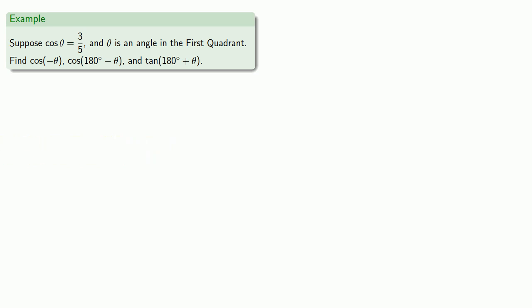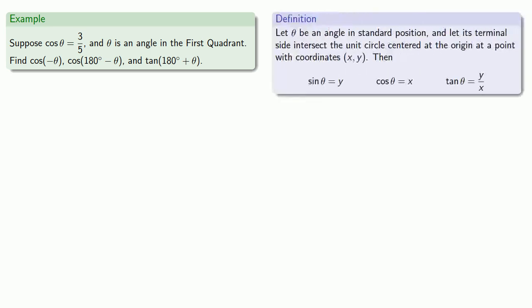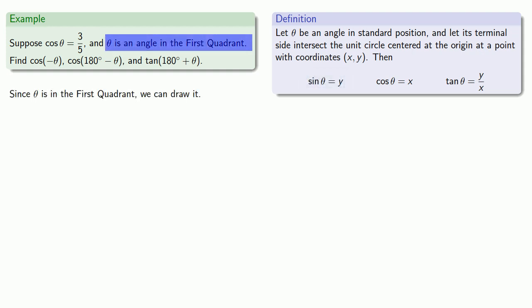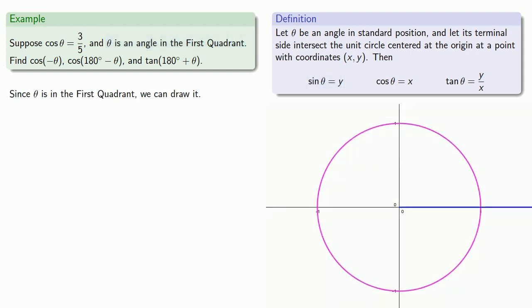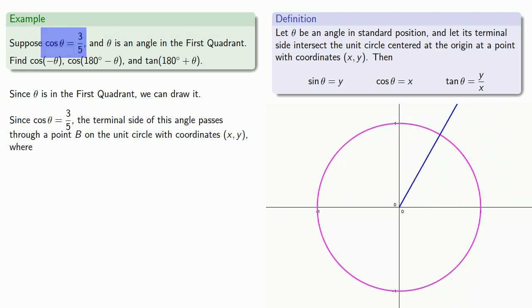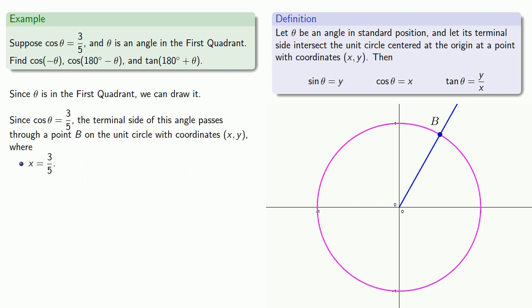To begin with, remember that if θ is an angle in standard position, the terminal side of the angle passes through (x, y) on the unit circle x² + y² = 1, where x is the cosine and y is the sine. So since θ is in the first quadrant, we can draw it. Since the cosine is 3/5, the terminal side of this angle passes through a point B on the unit circle with coordinates (x, y), where x is 3/5. And y can be found by solving x² + y² = 1.